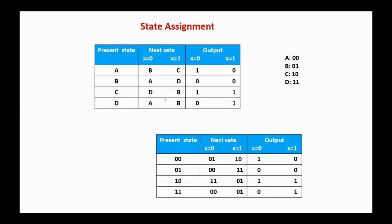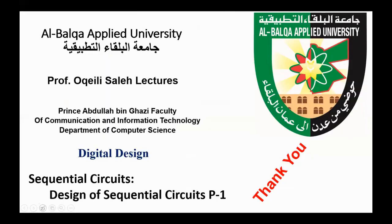In the design procedure, assigning the states' binary values is called state assignment. For example, in this table we have four states, so we need two bits to assign each state. We can assign A with 00, B with 01, C with 10, and D with 11, and here is our state table after state assignment. Another assignment can be made as well. Now, armed with this knowledge of flip-flops, excitation tables, state reduction, and state assignment, we can move to part two of this topic: the design of sequential circuits. Thank you.